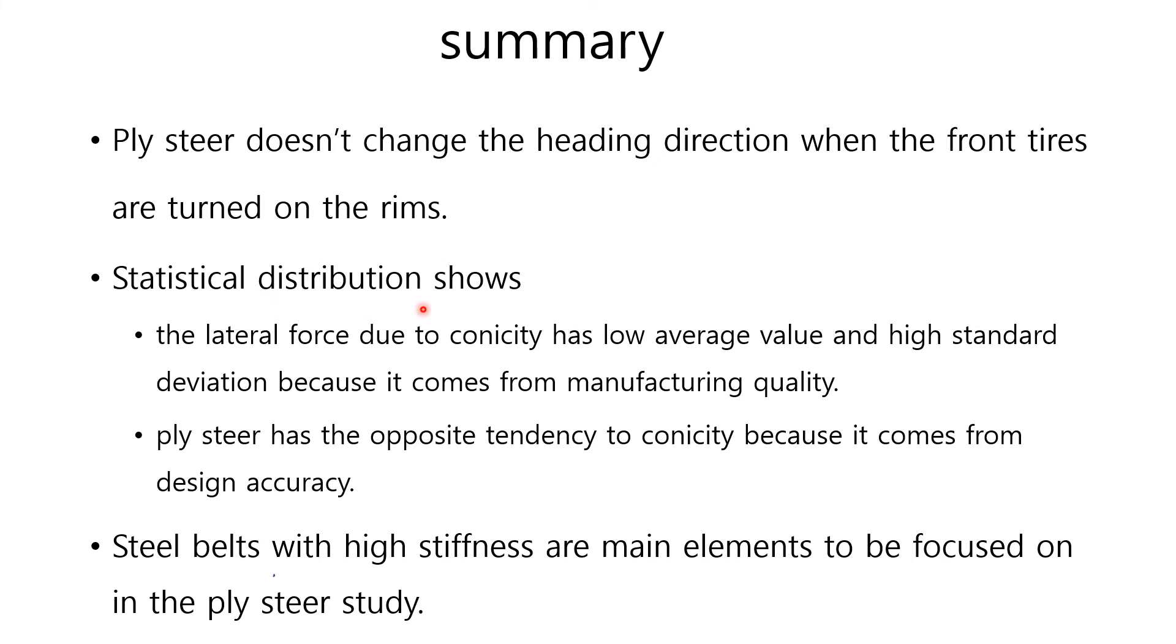Statistical distribution shows the lateral force due to the conicity has a low average value and high standard deviation because it comes from manufacturing quality. Ply Steer has a positive tendency compared to conicity because it comes from design accuracy. Steel belts with high stiffness are main elements to be focused on in the Ply Steer study.